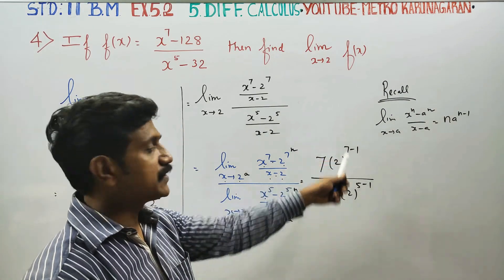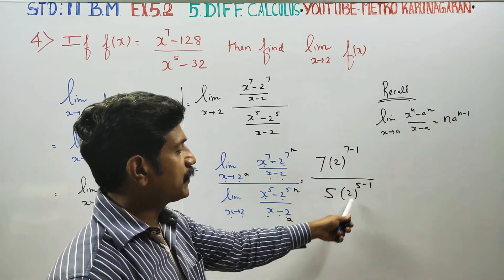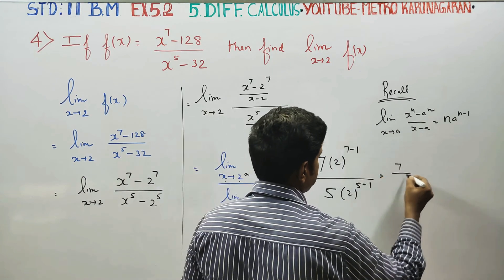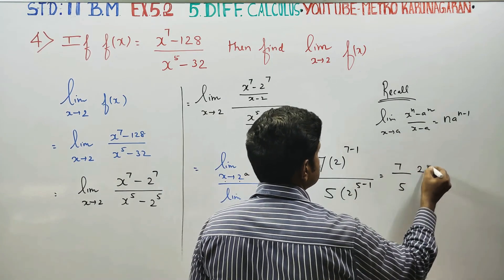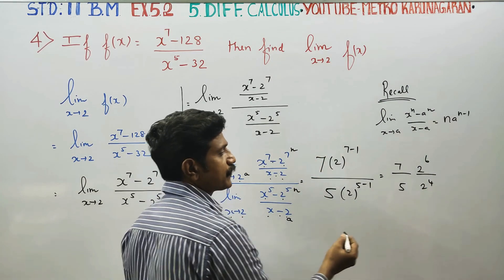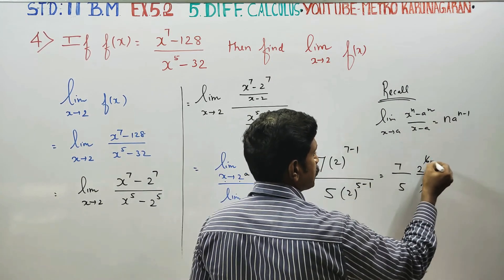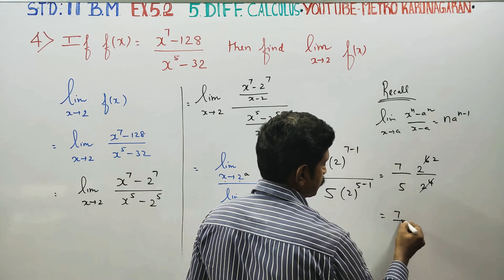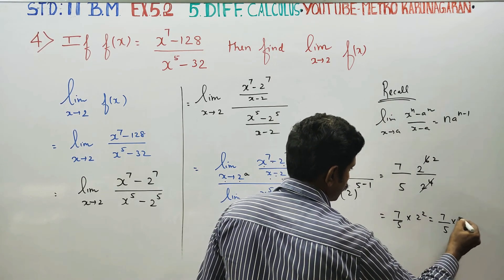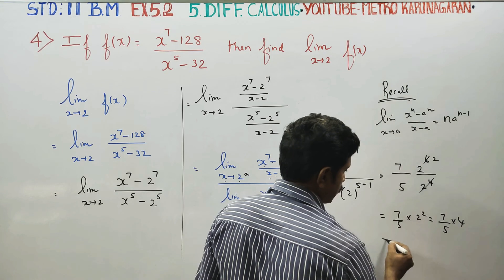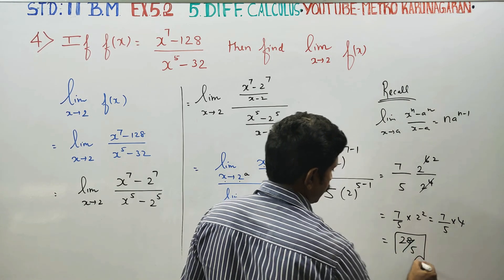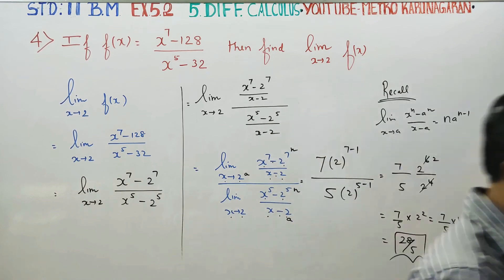Applying the formula — n into a power n minus 1 — with n equal to 7, a equal to 2 in the numerator, and n equal to 5, a equal to 2 in the denominator, we get 7 into 2 power 6 divided by 5 into 2 power 4. The 2 power 4 cancels, leaving 7 by 5 into 2 squared, which equals 7 by 5 into 4, giving 28 by 5. So 28 by 5 is your final answer for this problem.